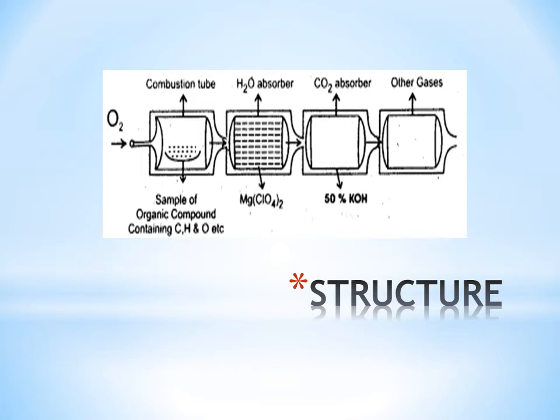Then in the third chamber, 50% KOH is added to absorb carbon dioxide. We know that carbon dioxide is acidic in nature and potassium hydroxide is basic in nature. So carbon dioxide will absorb on potassium hydroxide and can be easily measured by knowing the change in volume of potassium hydroxide. In the last chamber, all other gases will move out.